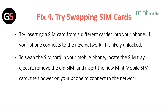Fix 4: Try swapping SIM cards. Try inserting a SIM card from a different carrier into your phone. If your phone connects to the new network, it is likely unlocked. To swap your SIM card, locate the SIM tray, eject it, remove the old SIM, and insert the new Mint Mobile SIM card. Then power on your phone to connect to the network.